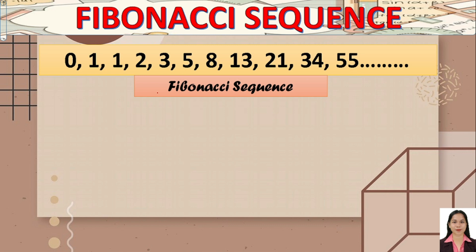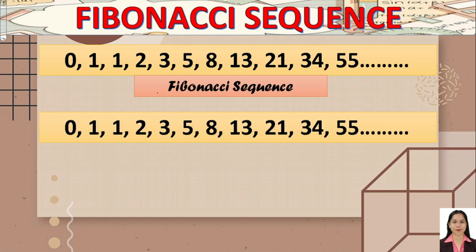In this pattern, what is the rule? We have 0 plus 1 — we simply add the two preceding numbers. The Fibonacci sequence begins with either 0 or 1, and each subsequent number is found by getting the sum of the two preceding numbers. You just add the two preceding numbers to get the next term.